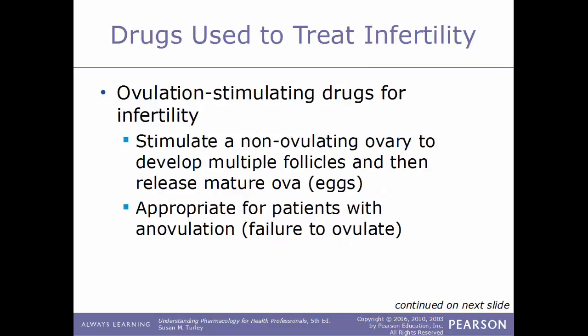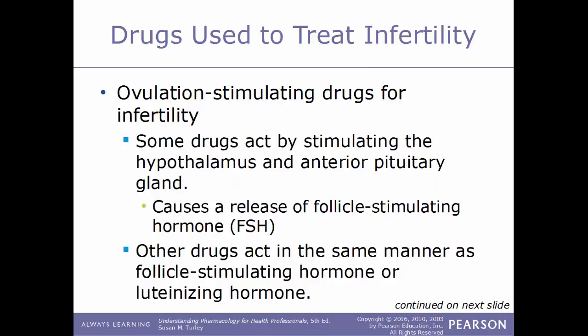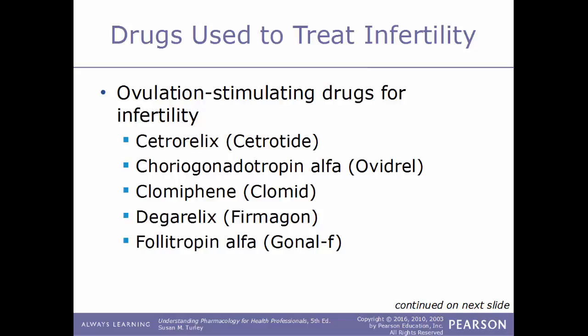The first kinds of drugs used for infertility are ovulation-stimulating drugs. These stimulate a non-ovulating ovary to develop multiple follicles and then release mature eggs. This is appropriate for patients with anovulation, which is a failure to ovulate, but not appropriate for patients with infertility due to a blocked fallopian tube or problems requiring surgical intervention. Some of these drugs stimulate the hypothalamus and the anterior pituitary gland to cause release of FSH, while others act in the same manner as FSH or luteinizing hormone.